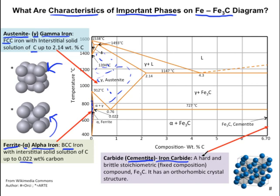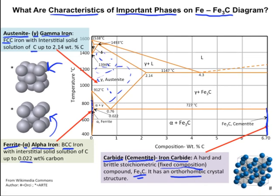The last important phase is carbide, also known as cementite or iron carbide. Carbide is a hard and brittle stoichiometric compound, Fe3C. Stoichiometric means it has a fixed composition, so it is not a solid solution — it is a compound. It has an orthorhombic crystal structure and is found at 6.67 weight percent carbon.